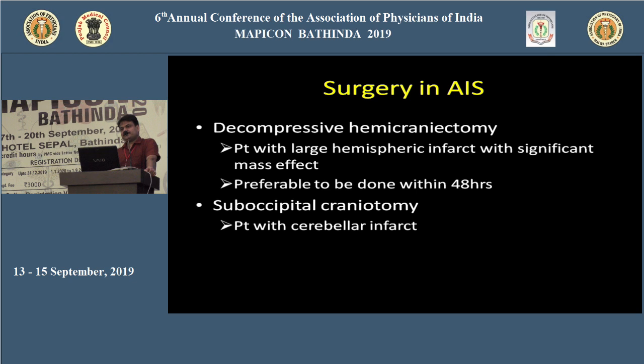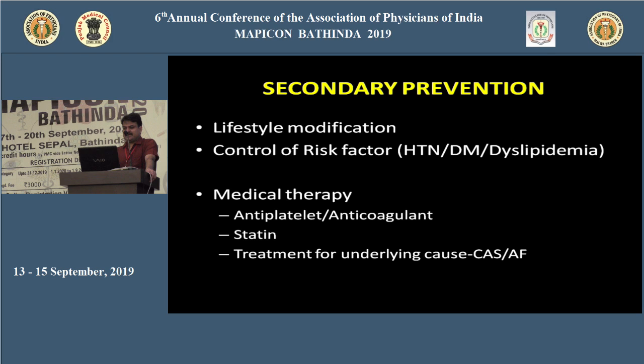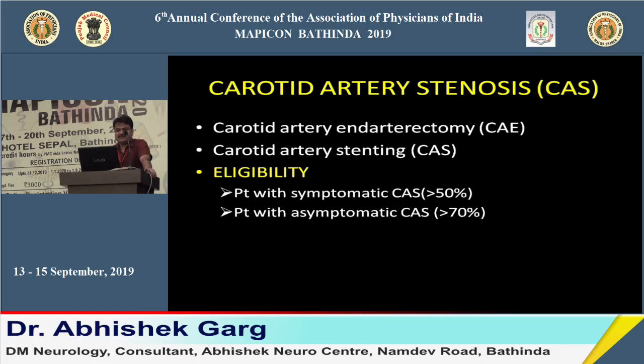For stroke rehabilitation: physiotherapy, occupational therapy, and speech therapy are essential, along with prevention of complications of immobility. For secondary prevention: lifestyle modification, control of risk factors — hypertension, diabetes, dyslipidemia — medical treatment with statins, antiplatelets, and anticoagulants, and treatment of underlying disease. If vascular imaging shows more than 50 percent carotid stenosis, carotid endarterectomy or carotid artery stenting should be considered.